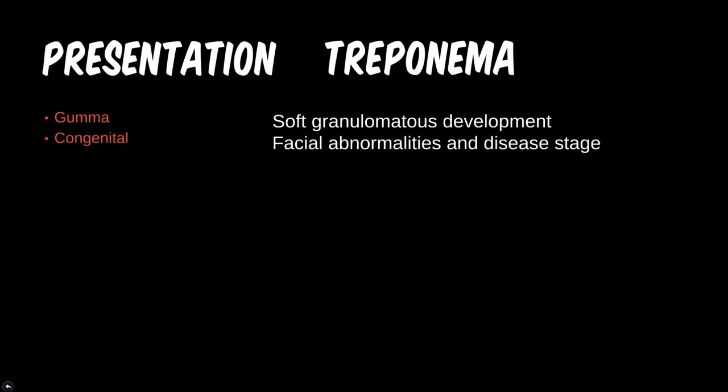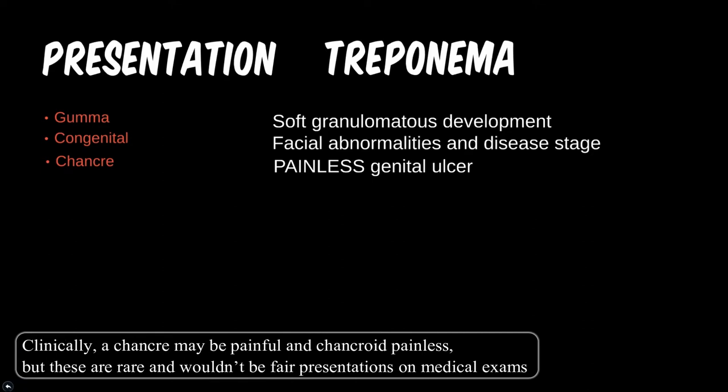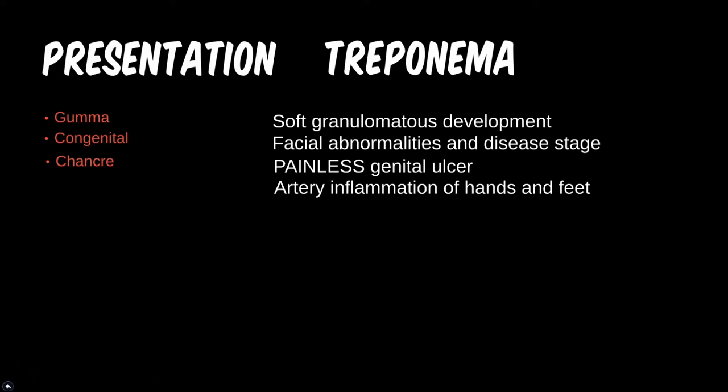These congenital findings can be seen in newborns of infected mothers. Usually the placenta acts as a protective barrier for a fetus, but some pathogens and pharmaceuticals can get past it. Next, a painless lesion typically seen in the genital or perianal region — this is the chancre, which is pathognomonic for primary syphilis. These lesions may be similar to the chancroid in appearance.